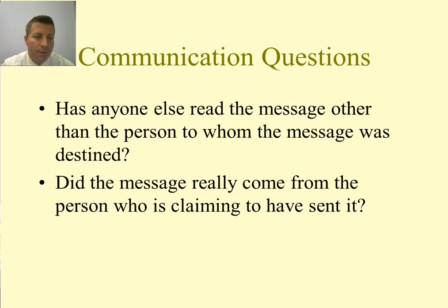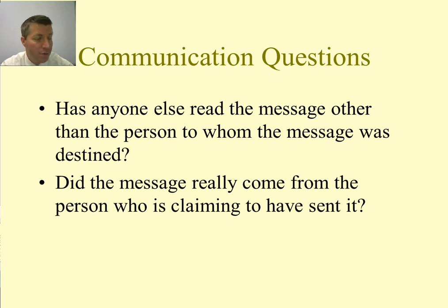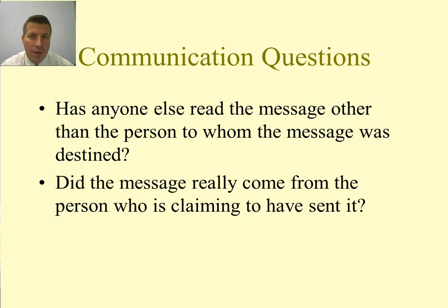What makes this tricky is that Alice and Bob are actually getting their messages encrypted with a different key than they think. There are two questions we want to answer when it comes to communication: has anyone else read the message other than the intended recipient, and did the message really come from the person claiming to have sent it?